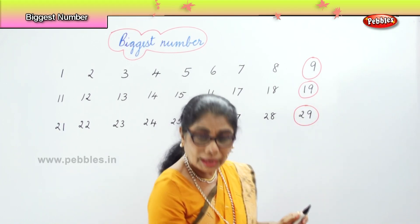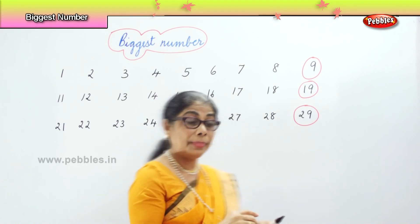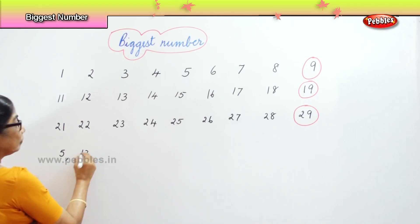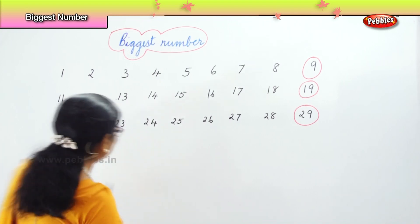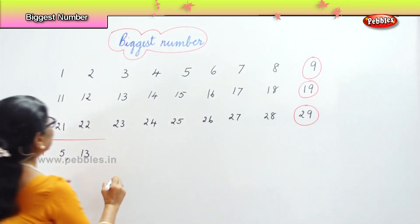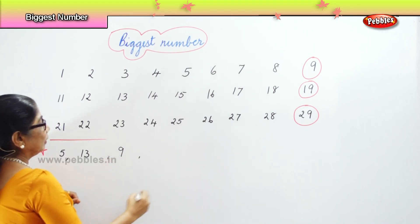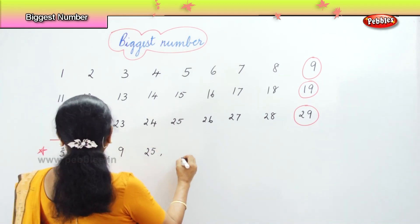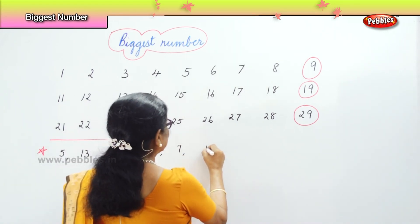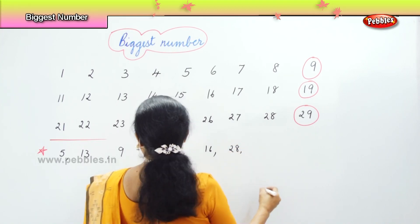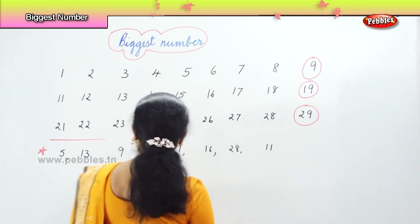Now I'll give you a mix-up and you tell me — identify the biggest number. I'm going to put down here: five, thirteen, nine, twenty-five, seven, sixteen, twenty-eight, and eleven. Now look at the numbers I have here. I have nine numbers. I'll put down one more — that is twenty-eight. Let's look at: five, thirteen, nine, twenty-seven, sixteen, eighteen, eleven, and sixteen.